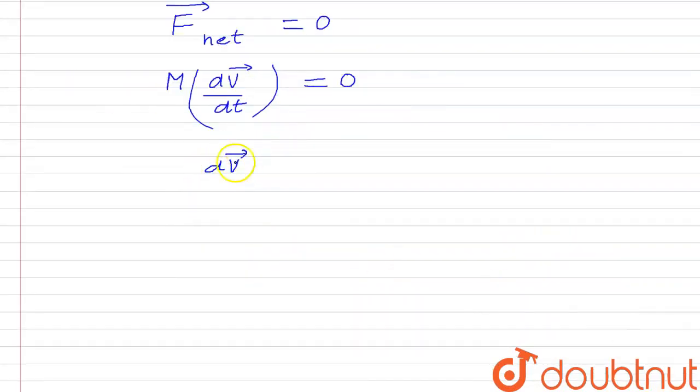Since dv/dt equals zero, from this equation we can say that the velocity is constant. So we can write that V is constant, which implies that the center of mass of an isolated system has constant velocity.